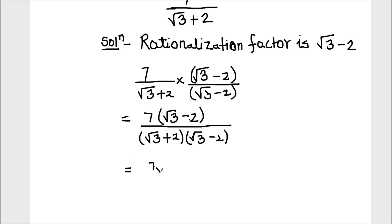So, the numerator will be 7 square root of 3 minus 7 times 2 divided by, this is going to be A square, which is root 3 square minus B square, which is 2 square. Here we are making use of the identity A plus B times A minus B equals A square minus B square.